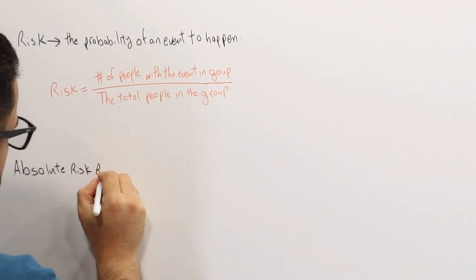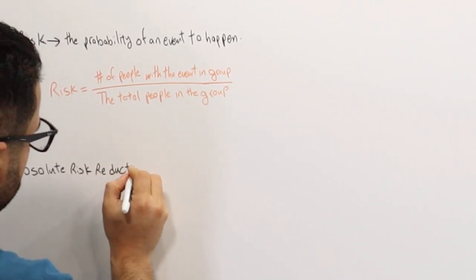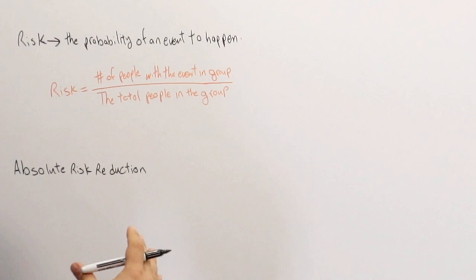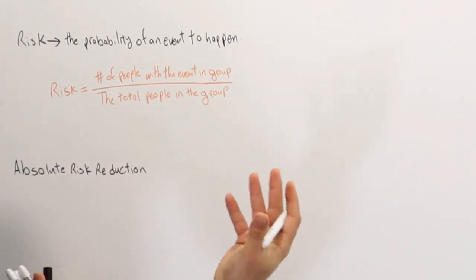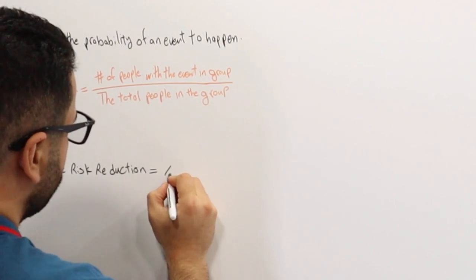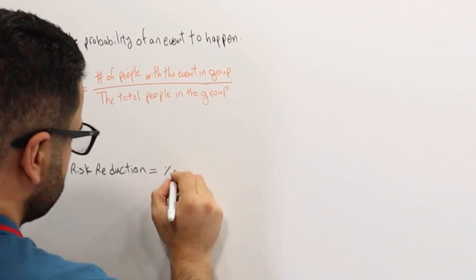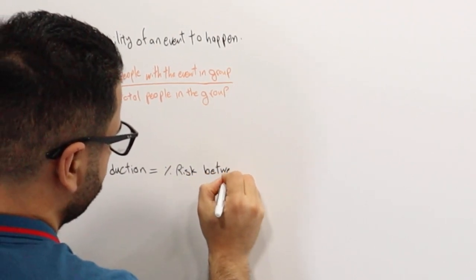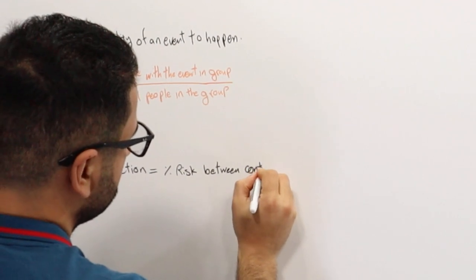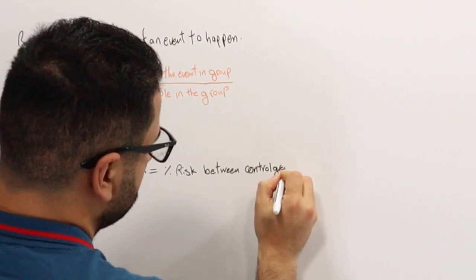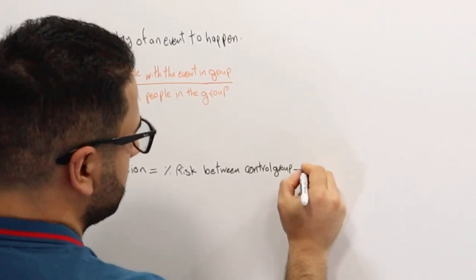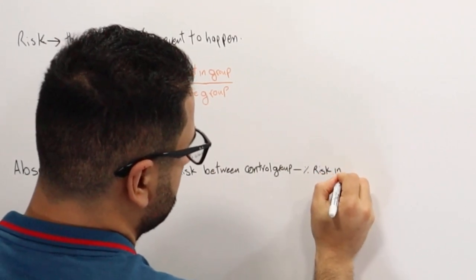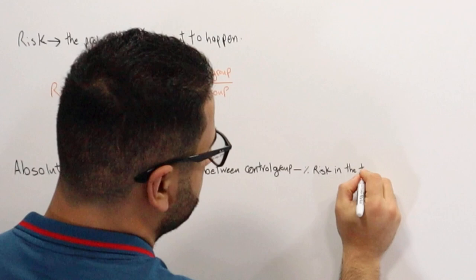Absolute risk reduction is basically the true difference between the treatment group and the control group. It is the percent difference in risk between the control group minus the percent risk in the treatment group.